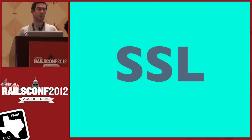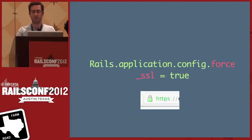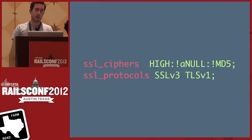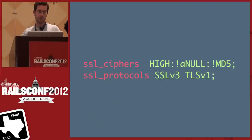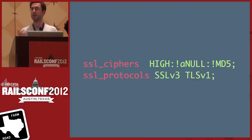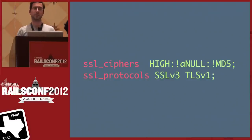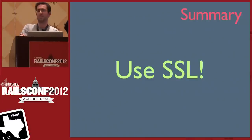SSL has come up several times, but it's such an important topic it deserves its own section. Use it everywhere — it's a slight pain to set up initially but once it's done, it's done. Also, once SSL is set up, configure your web server to exclude weaker ciphers. This Nginx config example specifies which SSL ciphers are allowed — without this, you could be forced onto a weaker cipher with known security holes. This is the default in later versions of Nginx but earlier versions allowed weaker ciphers, so check your version.